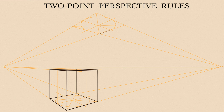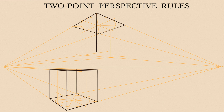If a cube is seen from below, we would see its top and two lateral sides. In the view from above, we would see the bottom and two lateral sides. And when a cube is at eye level, only two lateral sides will be visible.